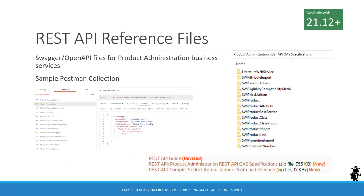If we look closer at the content of the Siebel Bookshelf, we find below the REST API guide two new zip file downloads. The first is an export of Swagger or OpenAPI files for the business services related to the new product administration REST API. The second is a sample collection for importing in Postman, so you can start exploring the new REST API really quickly.